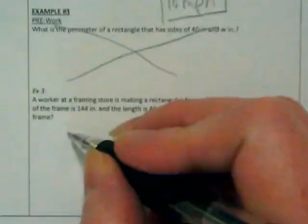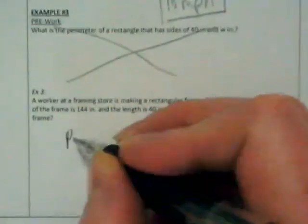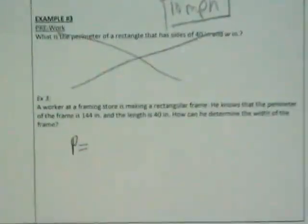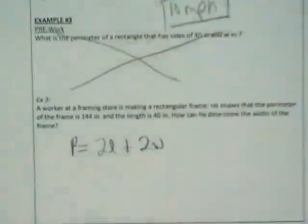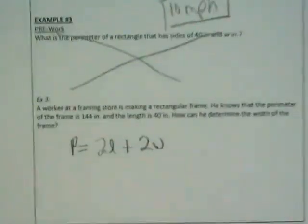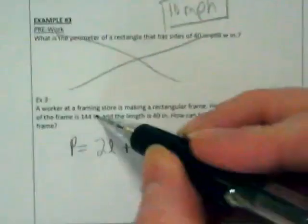What's our formula for perimeter? Two length plus two width. Now, we could move this equation around to get the W by itself. We'd have to subtract something, we'd have to divide by two, or we could just plug the numbers into the formula.